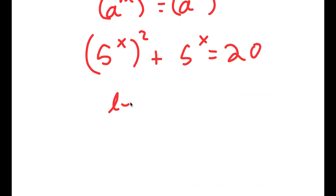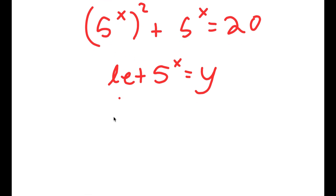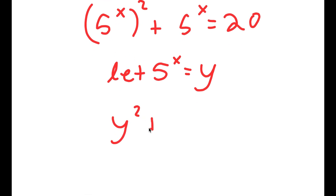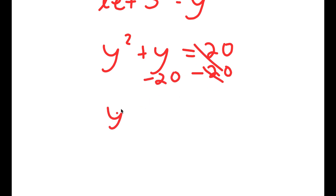Now I'm going to let 5 to the power of x equal the variable y. If I substitute y for 5 to the power of x, I get y squared plus y is equal to 20. Subtracting 20 from both sides, I get y squared plus y minus 20 is equal to 0.